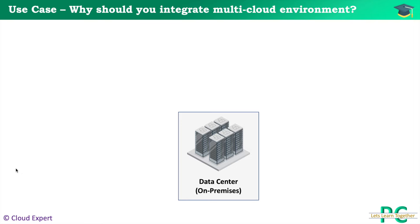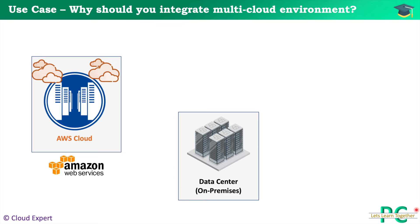Now let's review the use case. Let's assume this is your on-premise data center. Your on-premise can be spanned across multiple regions, but if you understand this network topology, you will be able to easily scale this networking architecture over multiple data centers. Your organization may be working in a multiple cloud environment.